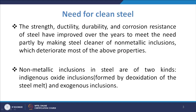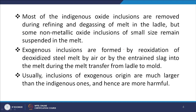Non-metallic inclusions in steel are of two types. The first is indigenous oxide inclusions, normally formed by the deoxidation of the steel melt. These are typically removed during refining and degassing of the melt in the ladle, where certain treatments are applied to remove them during the ladle processing stage.